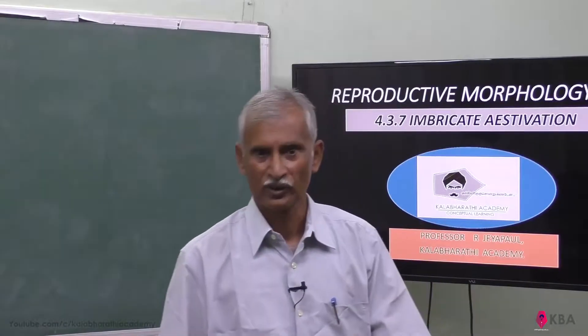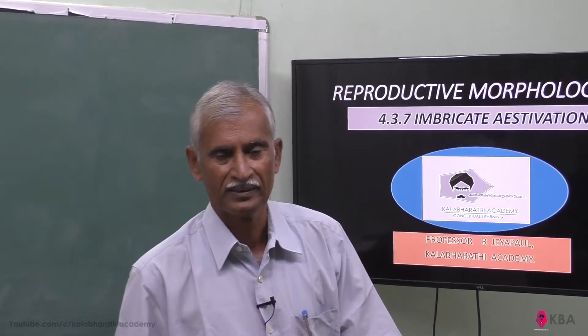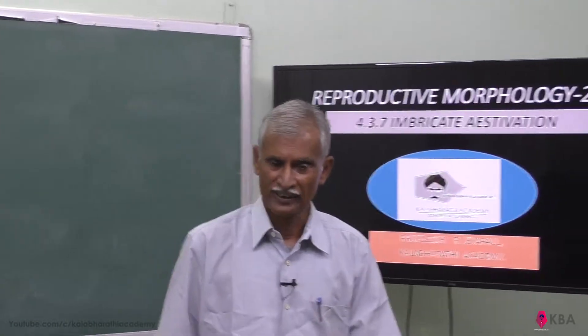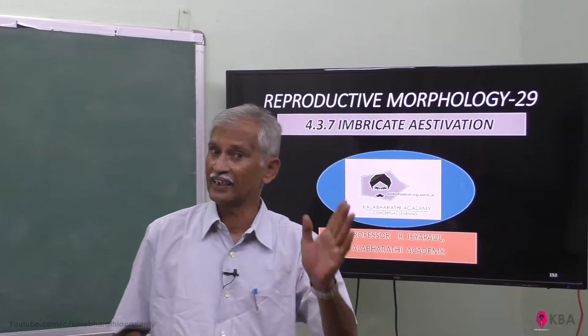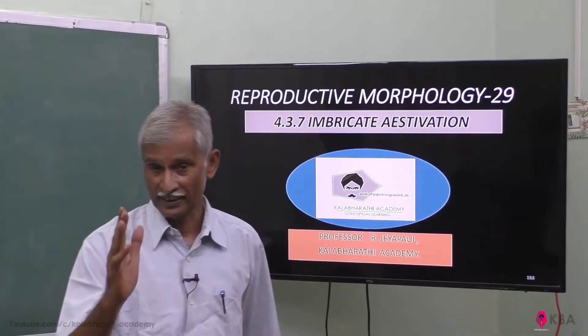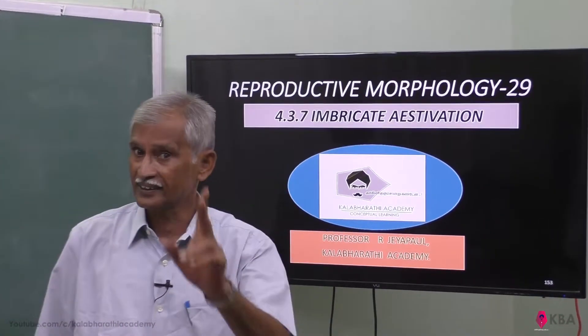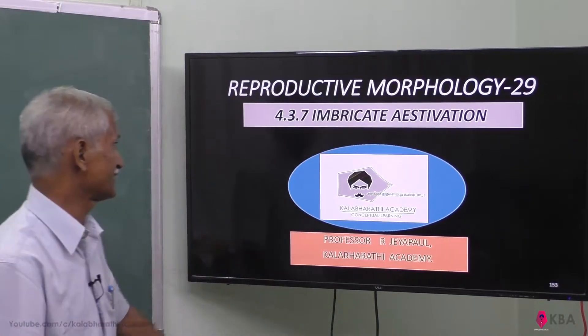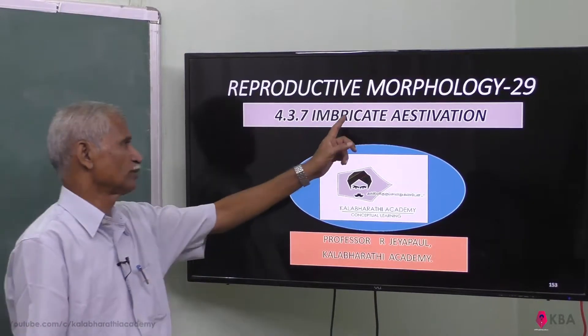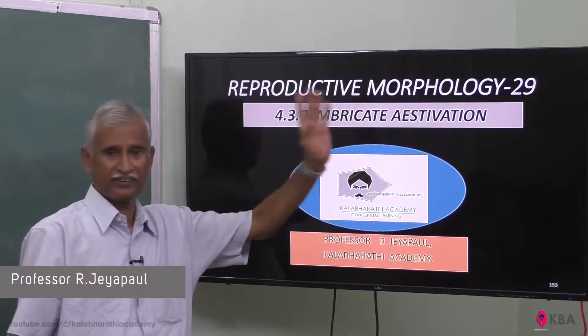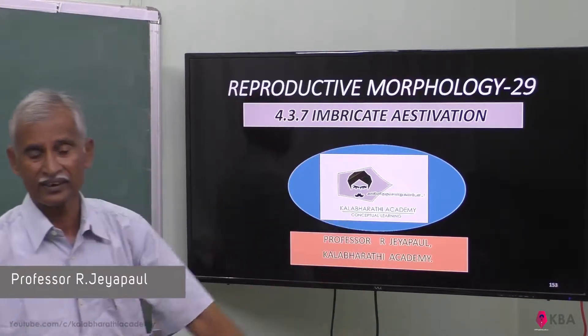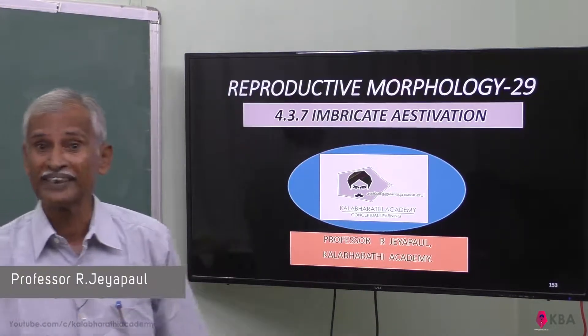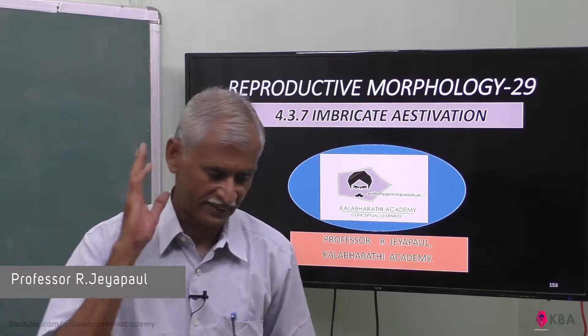Good morning, students. Welcome to Kalabarith Academy. In our discussion, the calyx and corolla aestivation in this variety is called Imbricate aestivation.